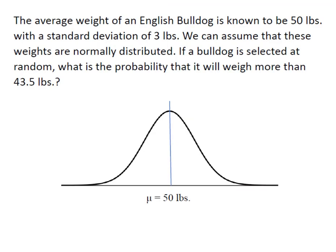I've got the same information here. I still have bulldogs with an average weight of 50 pounds, standard deviation of 3 pounds, normally distributed, except this time I want to know what's the probability that I randomly select a bulldog and it weighs more than 43.5 pounds.